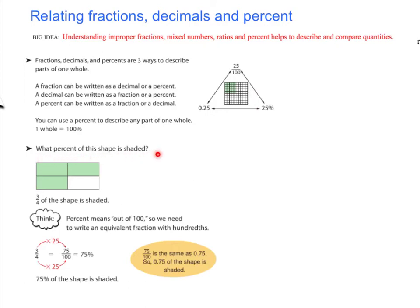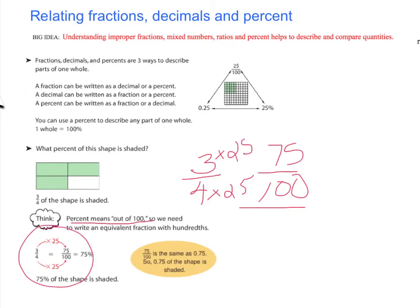What percent of this shape is shaded? Well, three-fourths of this percent is shaded. We can write it as a fraction, three-fourths. If we wanted to then change it into a percent, well, we know percent means out of a hundred. We could use an equivalent fraction to figure that out, or we could even divide. Four times what is 100? Well, four times 25 is 100. So what we do to the bottom, we do to the top. Three times 25 is 75.